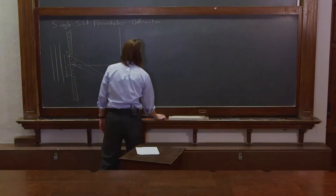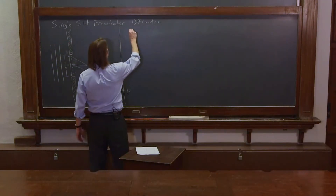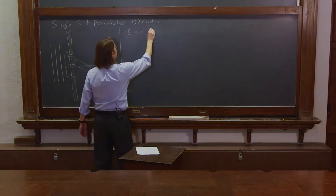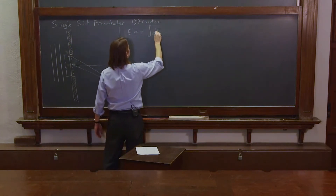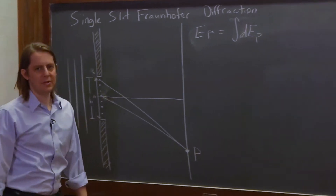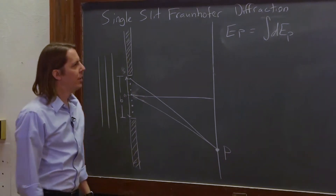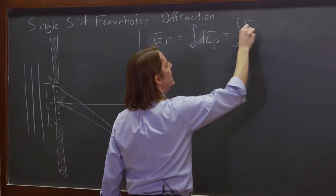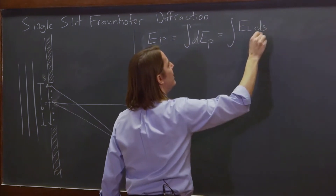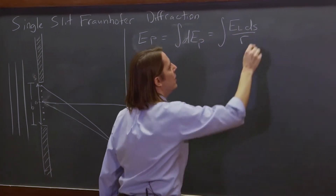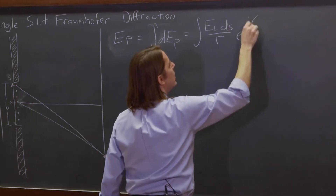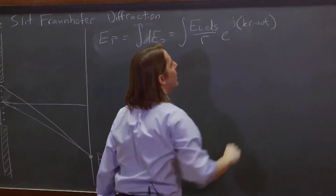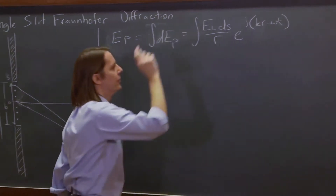Now we proceed with our integral. We know that we're trying to calculate the E field at point P, and to do that we have to sum up all the dE's from the previous board. So let's go ahead and write those. We have to sum up all the E_L times dS over R, times E to the jkR minus omega t. And there's the dS.